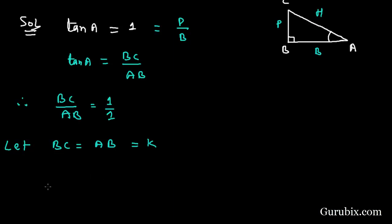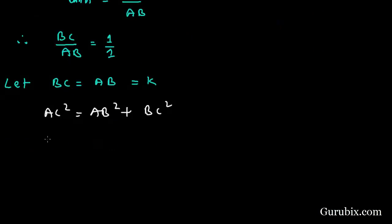And now we shall find out the value of AC by using the Pythagoras theorem. Then we have AC square is equal to AB square plus BC square. This means AC square is equal to K square plus K square.